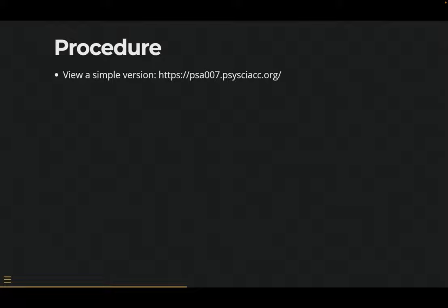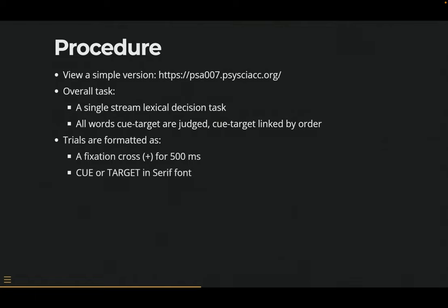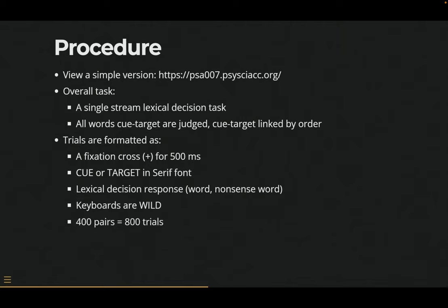The procedure — there's a code at the end you can use to look at it — the overall task is a single stream lexical decision task. All the cue words are judged, which is the big difference between the SPP and ours: every single word gets a judgment, which actually provides us with more data. Trials are formatted as a 500 millisecond fixation cross followed by the cue or target in lowercase font, so we're not cueing them by using uppercase for some and not others. Then they make a decision: is this a word or not? It's 800 trials, so it is very boring.